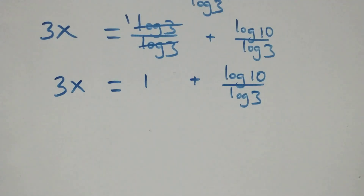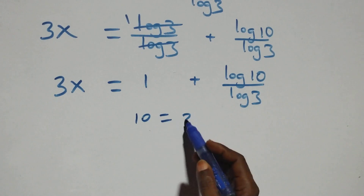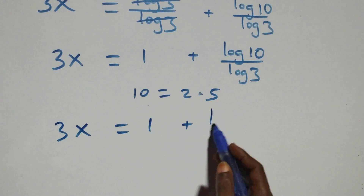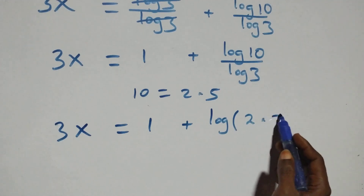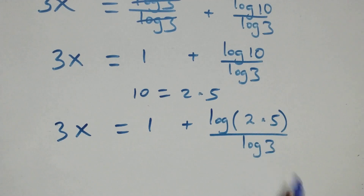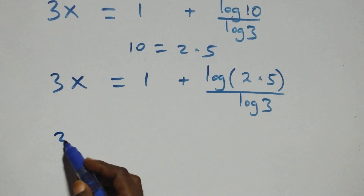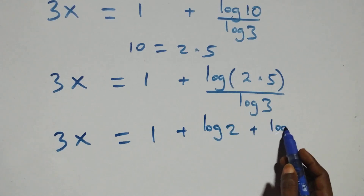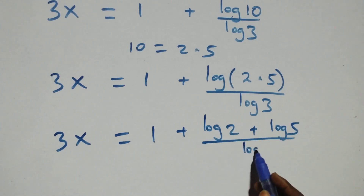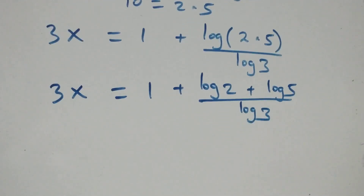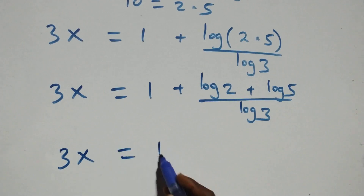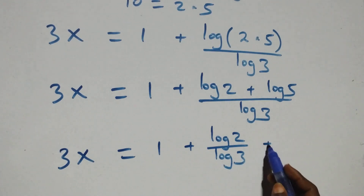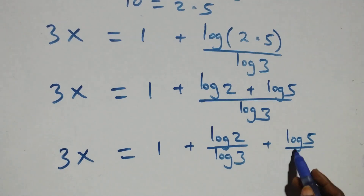Then we can also rewrite 10 as 2 times 5, and so all we have becomes 3x equals 1 plus log (2 times 5) over log 3. This also follows the law of logarithm and we have 3x equals 1 plus log 2 over log 3 plus log 5 over log 3.